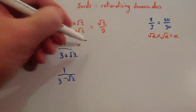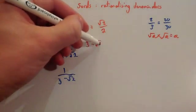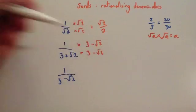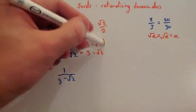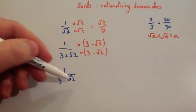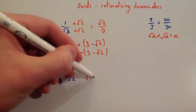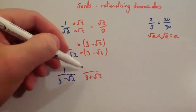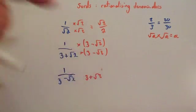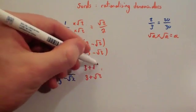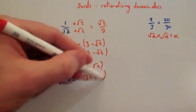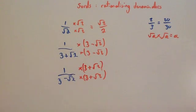So in this one, you would times the top by 3 minus root 2, and you would times the bottom line by 3 minus root 2. And for the other example, you would times it by the conjugate of 3 minus root 2, which would be 3 plus root 2. So you times both the top and the bottom by whatever's on the bottom line but with the opposite sign in the middle. Let me show you some examples of that now.